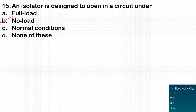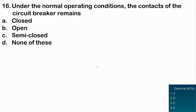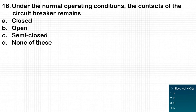The next question: under normal operating conditions, the contacts of the circuit breaker remain closed. Only during a fault does the circuit breaker operate and open the circuit; otherwise it remains closed.